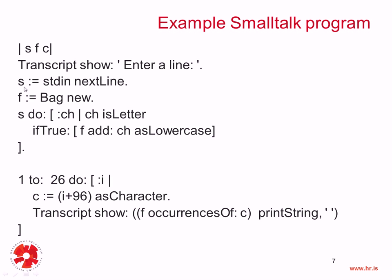In the next statement, we have an assignment: s is equal to stdin nextLine. We are sending the nextLine message to the object stdin, which is a built-in object in Smalltalk. That basically means we are reading from standard input. Whatever is read will be assigned to this variable s, which has no type. But presumably it will get the type String, because the user will input a string when the nextLine method is invoked.